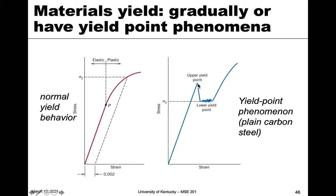The yield point phenomenon occurs in plain carbon steels: it's linear, then it reaches a certain point and actually drops fairly suddenly. Then it reaches a kind of plateau, deviates slightly but more or less remains flat for a bit, then goes back up into non-linear plastic behavior. This is known as yield point phenomenon, and we term the bottom part the lower yield point and the top the upper yield point.